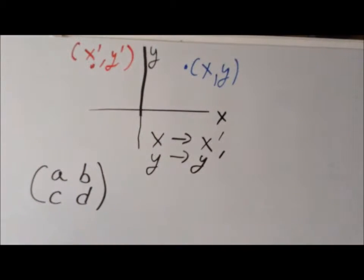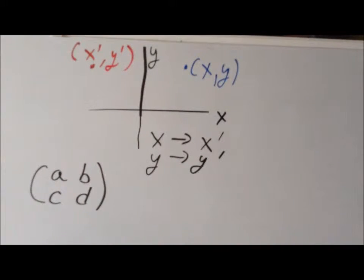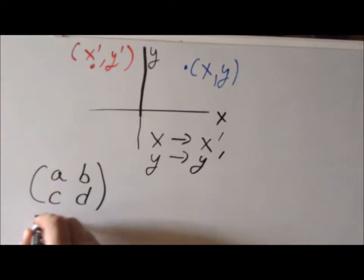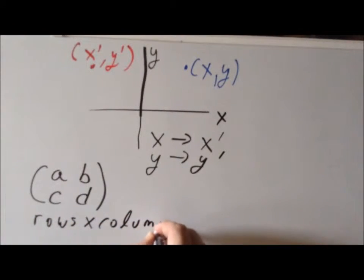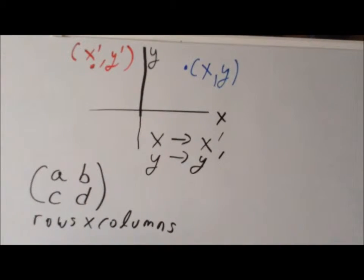One phrase which we'll use over and over again, which will help us use matrices, will be our mantra: rows times columns. With a matrix, we're interested in how many rows and how many columns. This rows times columns will also be helpful when we do a mathematical operation called matrix multiplication. In the case of this matrix, it is a two by two matrix because it has two rows and two columns.